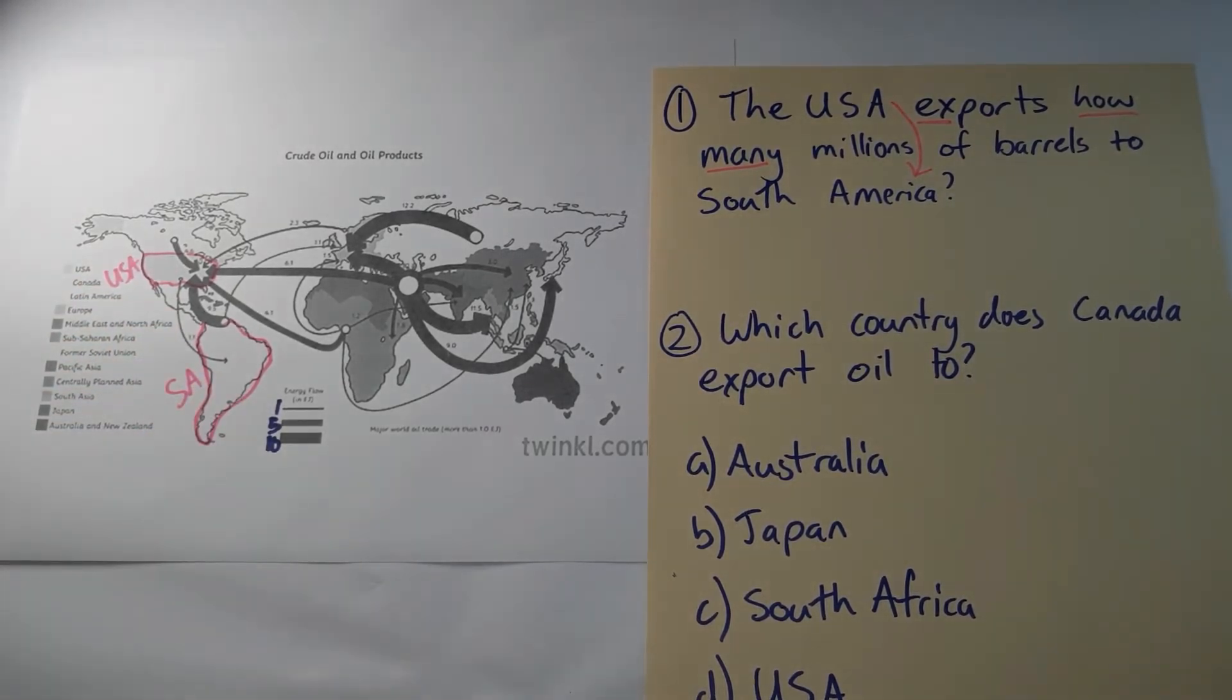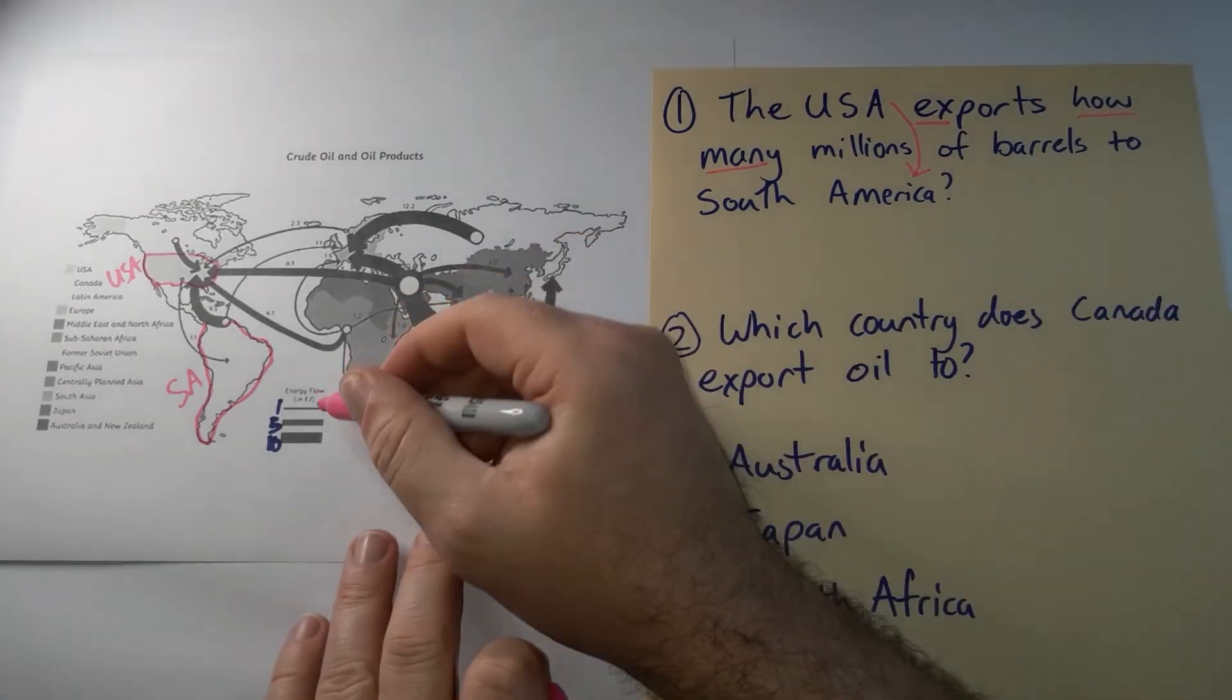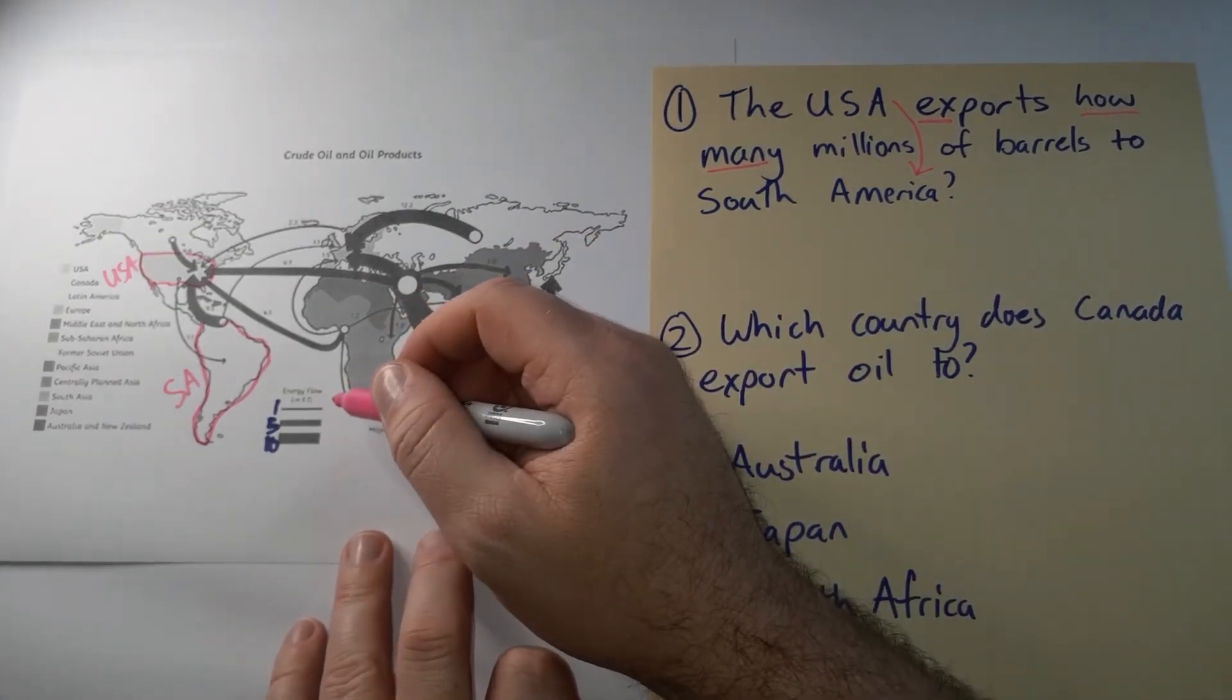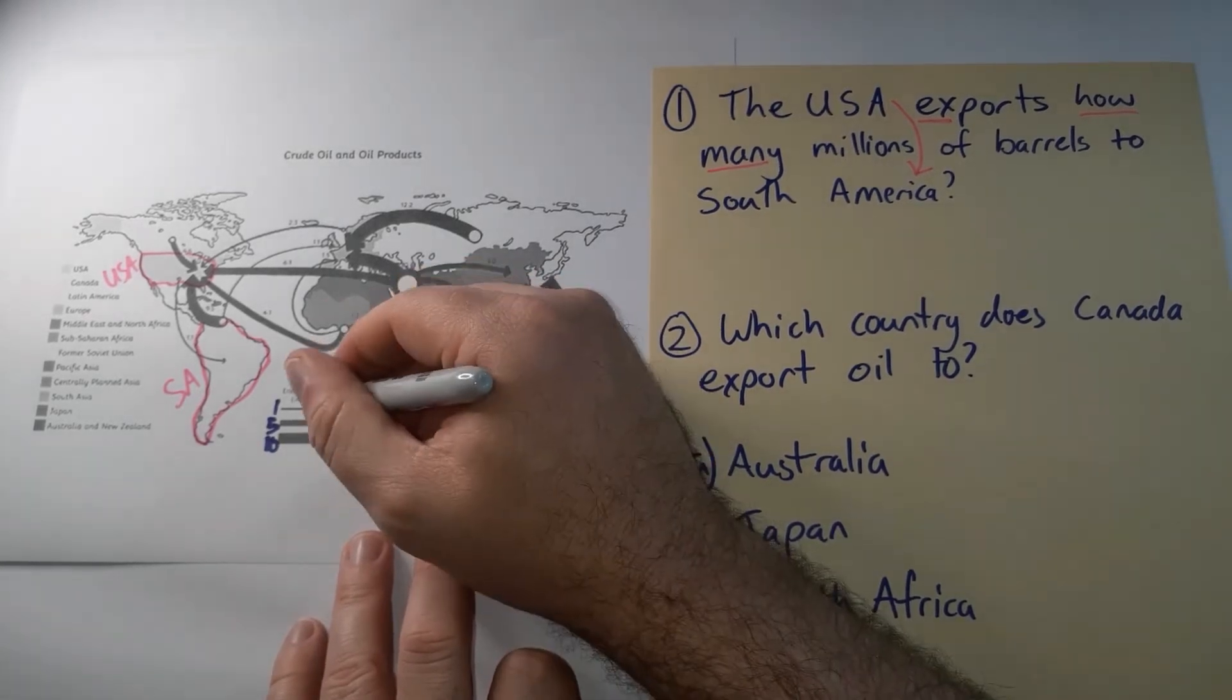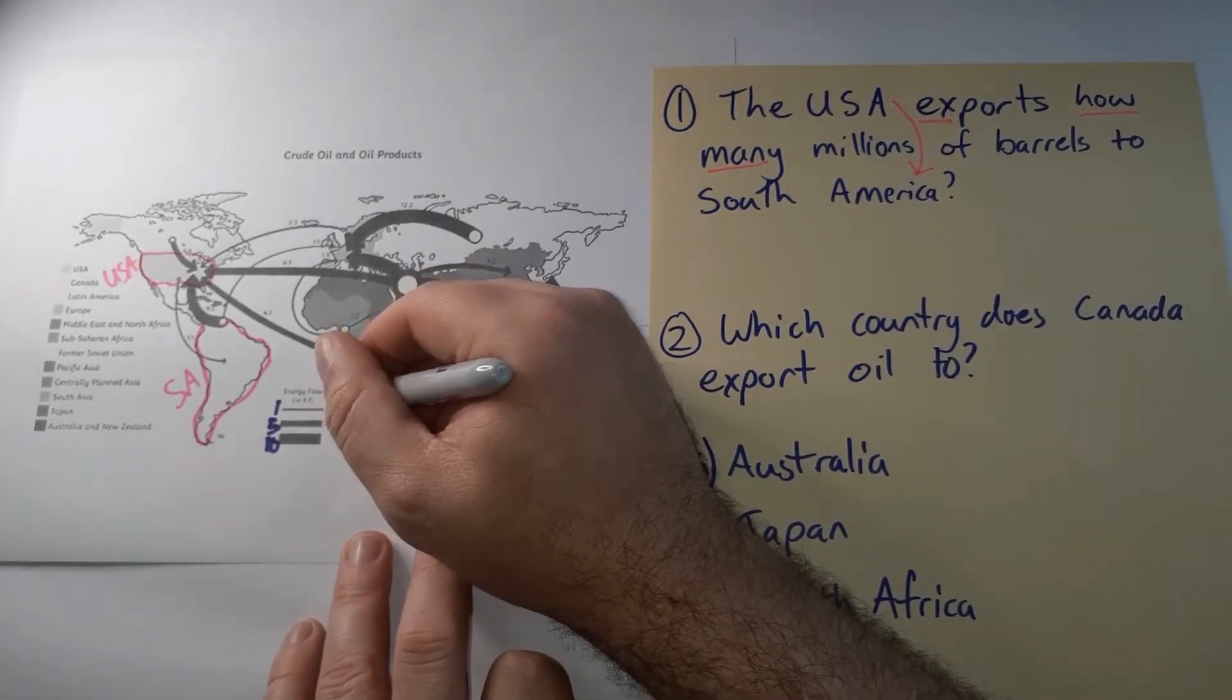Now we want to know how wide it is, or how thick it is. That's going to tell us how much or how many barrels. So the key here was really unclear, so I've written over the top of it and made it less clear. The very thin arrow was one million barrels.